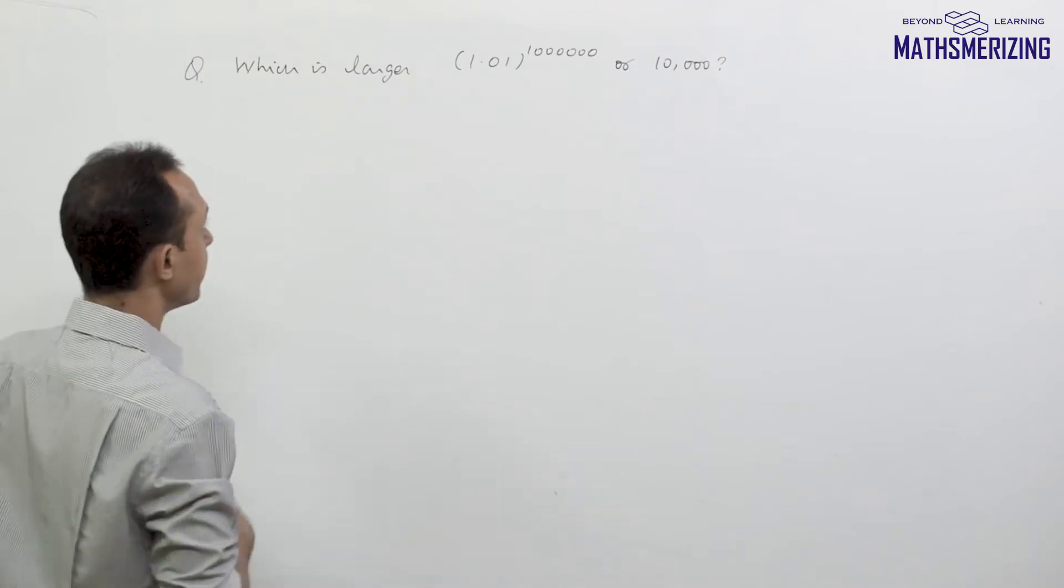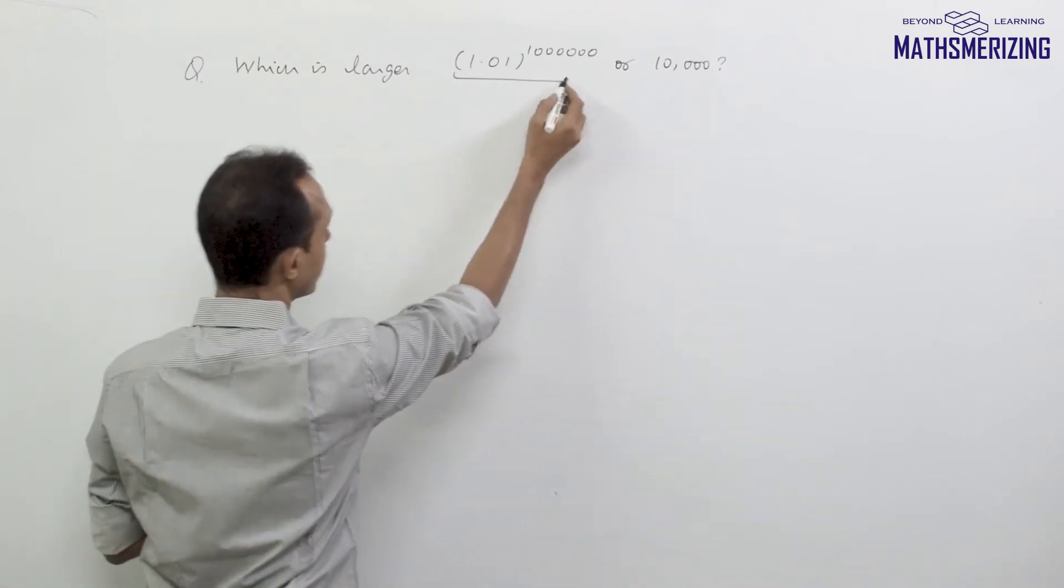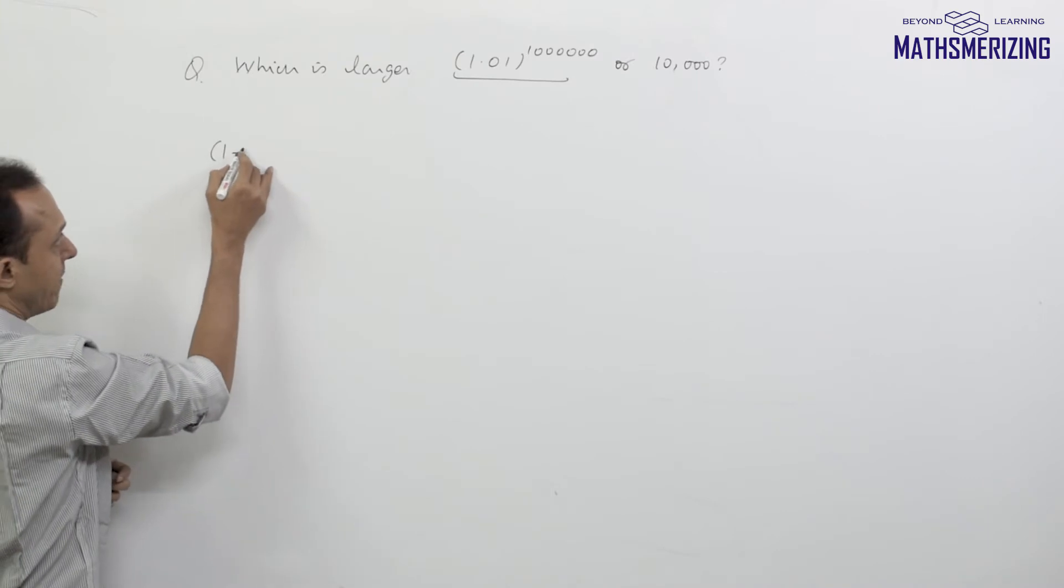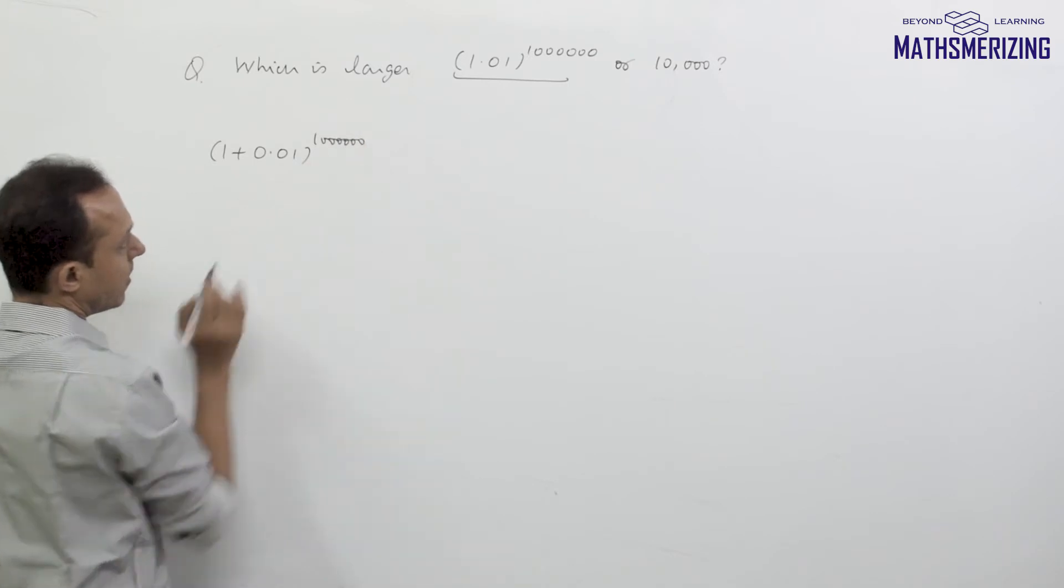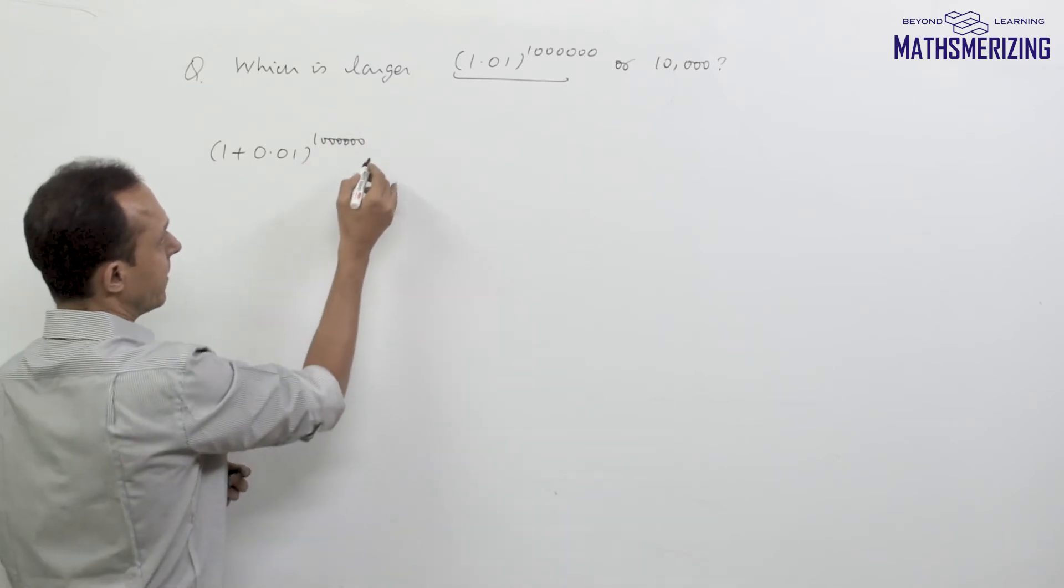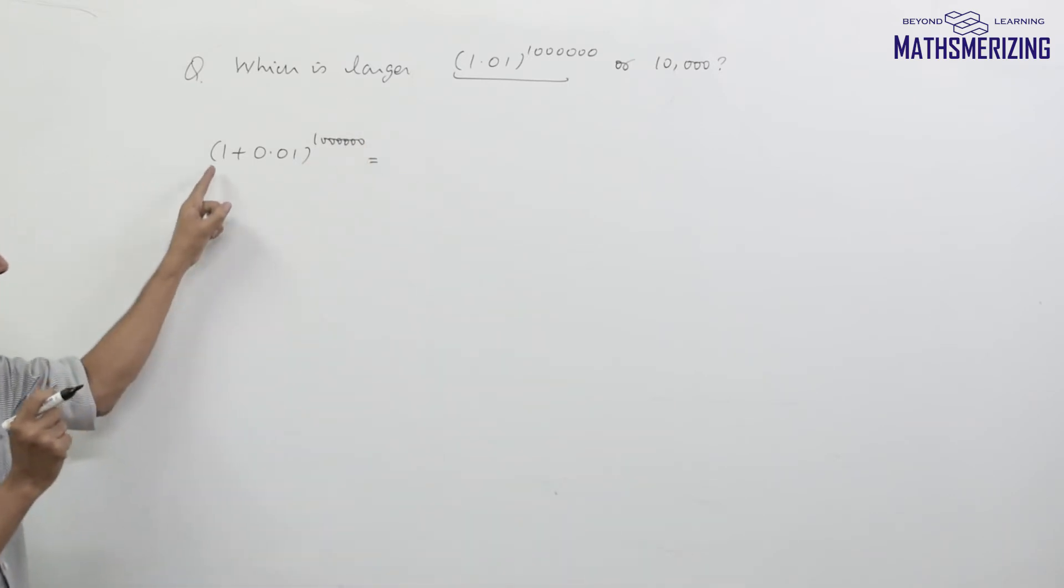I'll take the first number and write it as 1 plus 0.01 to the power 1 million. Now I can use the binomial theorem in that.